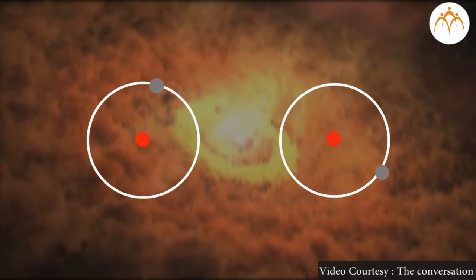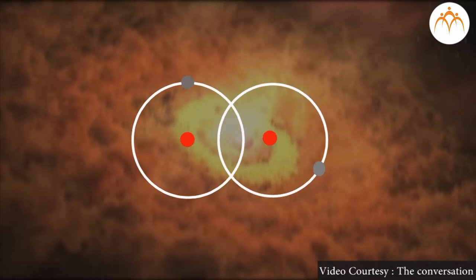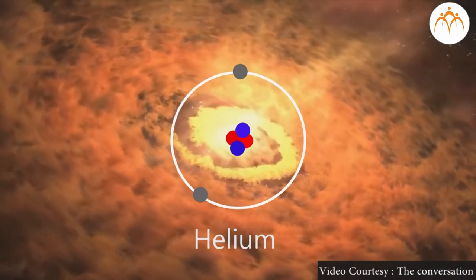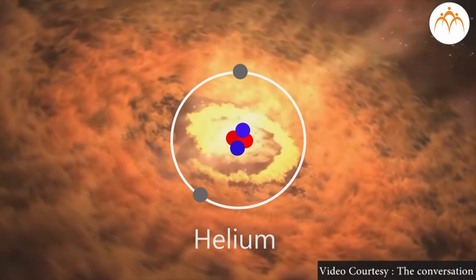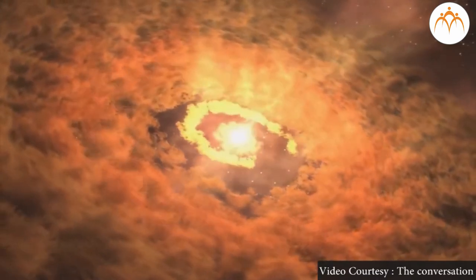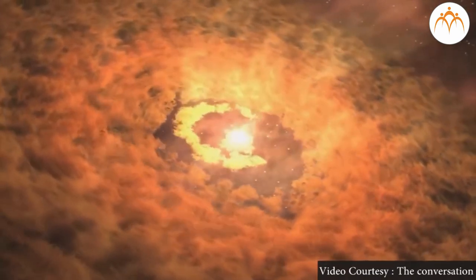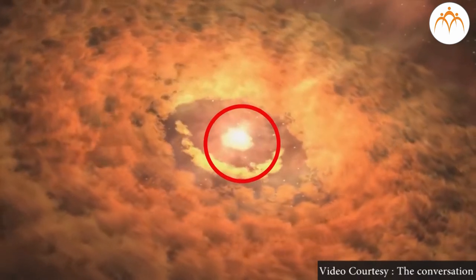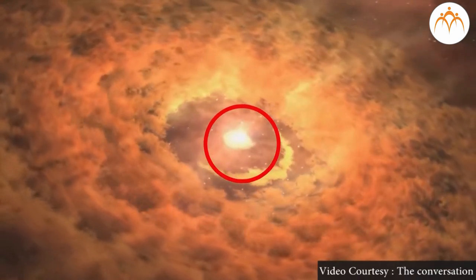The star keeps on burning for billions of years as it is fueled by the nuclear fusion of hydrogen to form helium. The outflow of energy from the center is important because due to this, the star does not collapse due to its own gravity. Larger the star, shorter the life.